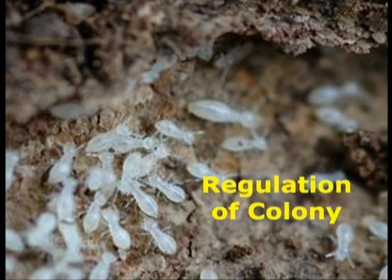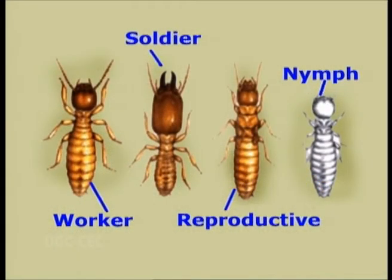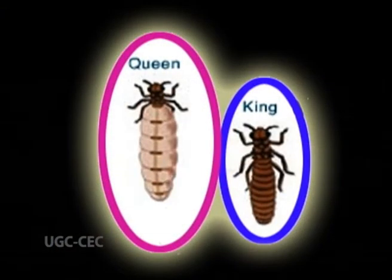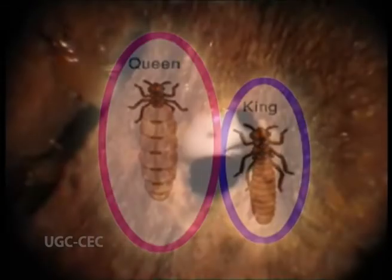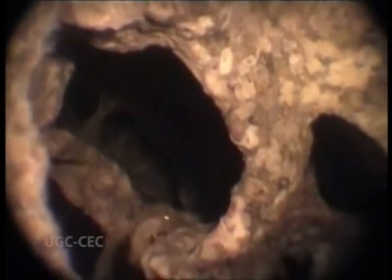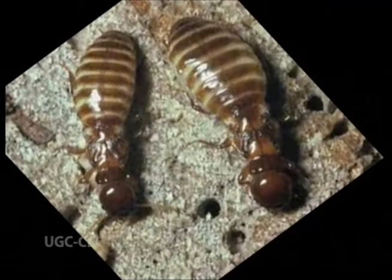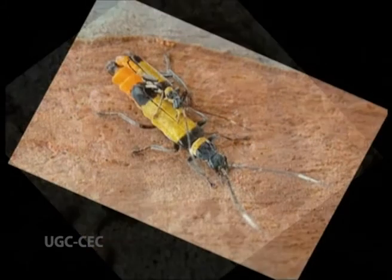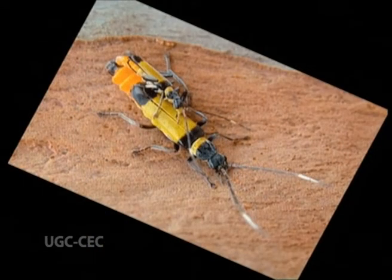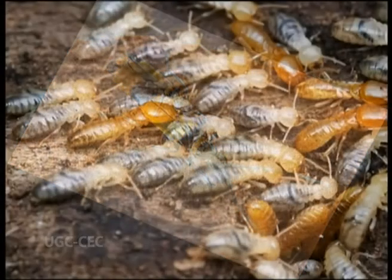Regulation of colony. The termite caste system is regulated by pheromones. The king and the queen each produce special pheromones that circulate throughout the colony and inhibit workers of the same sex from molting into reproductive adults. A death in the royal family or an increase in the size of the colony results in a lower concentration of the corresponding pheromone, and subsequently one or more workers will molt into replacement reproductives. Likewise, the concentration of sex-specific soldier pheromones regulates the number of male and female soldiers to fall within an optimal range based on colony size.